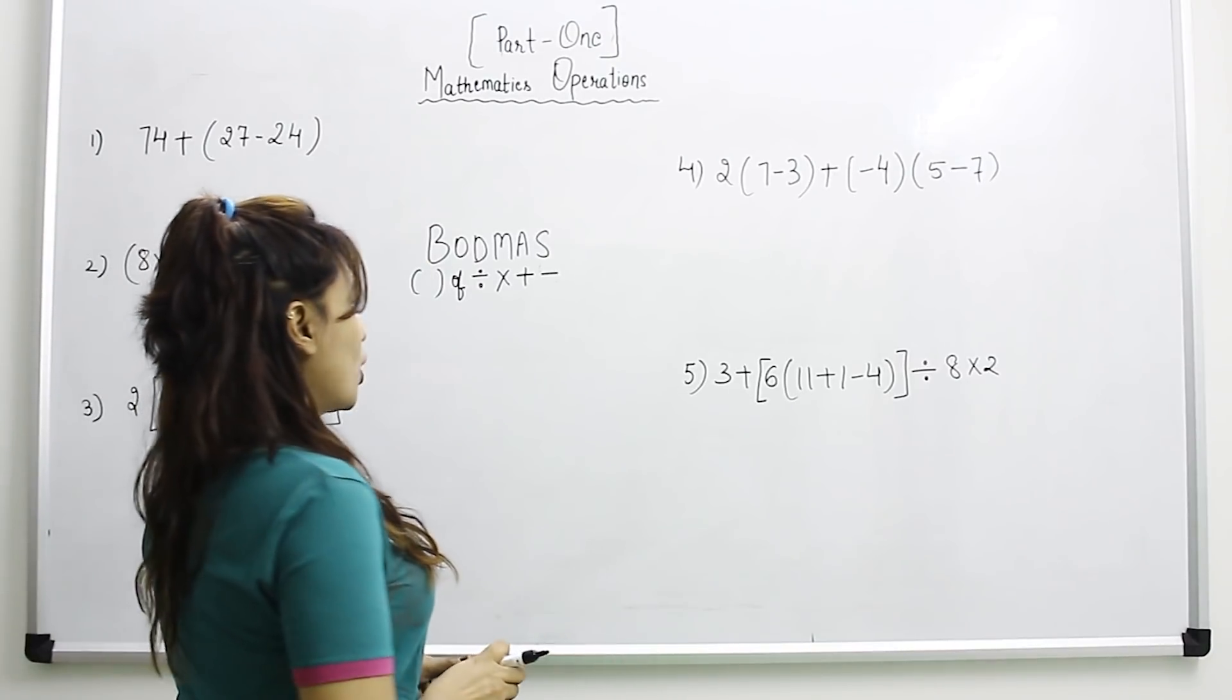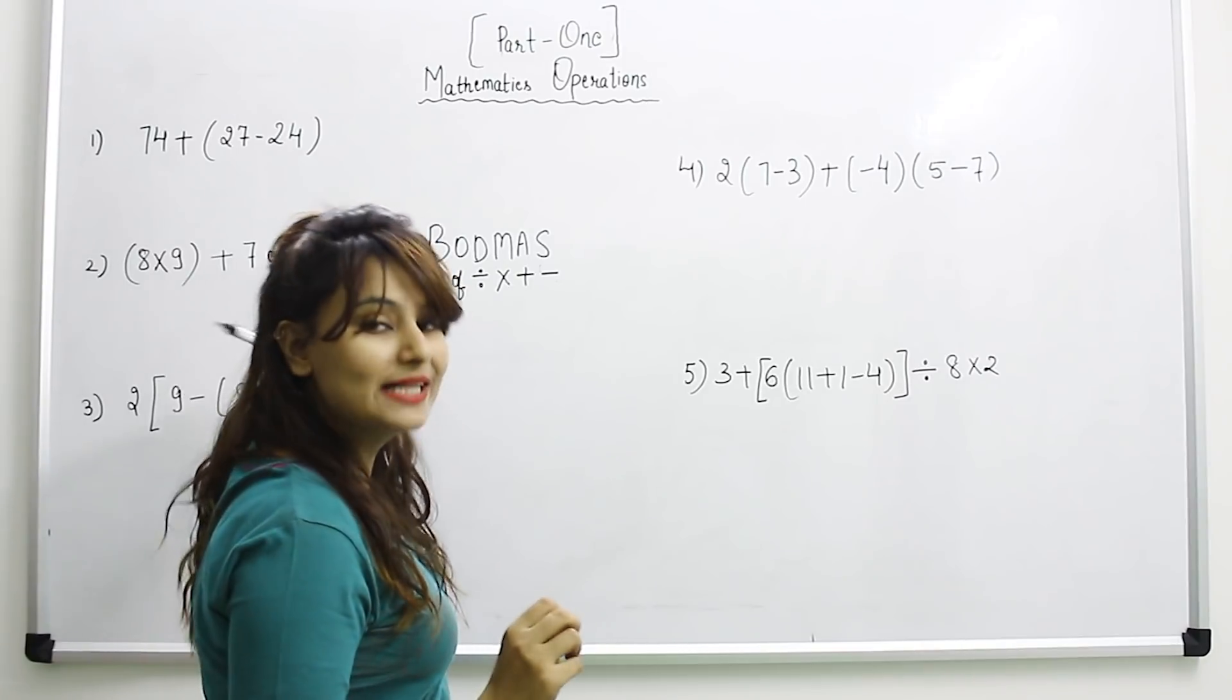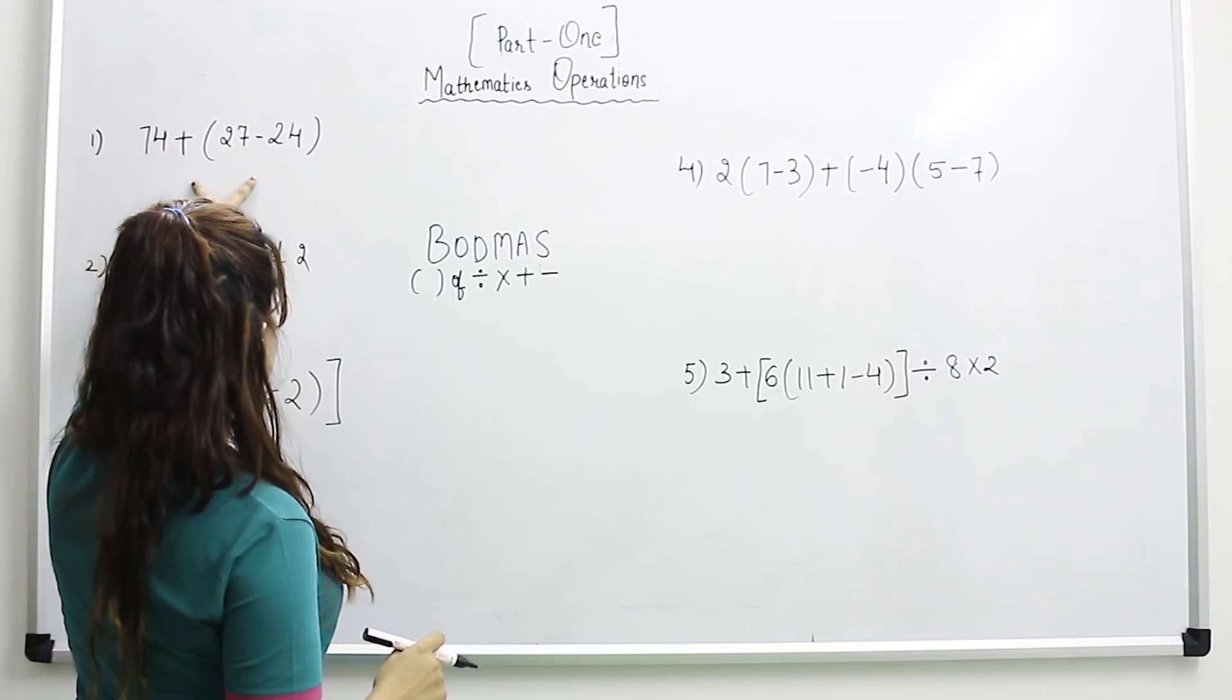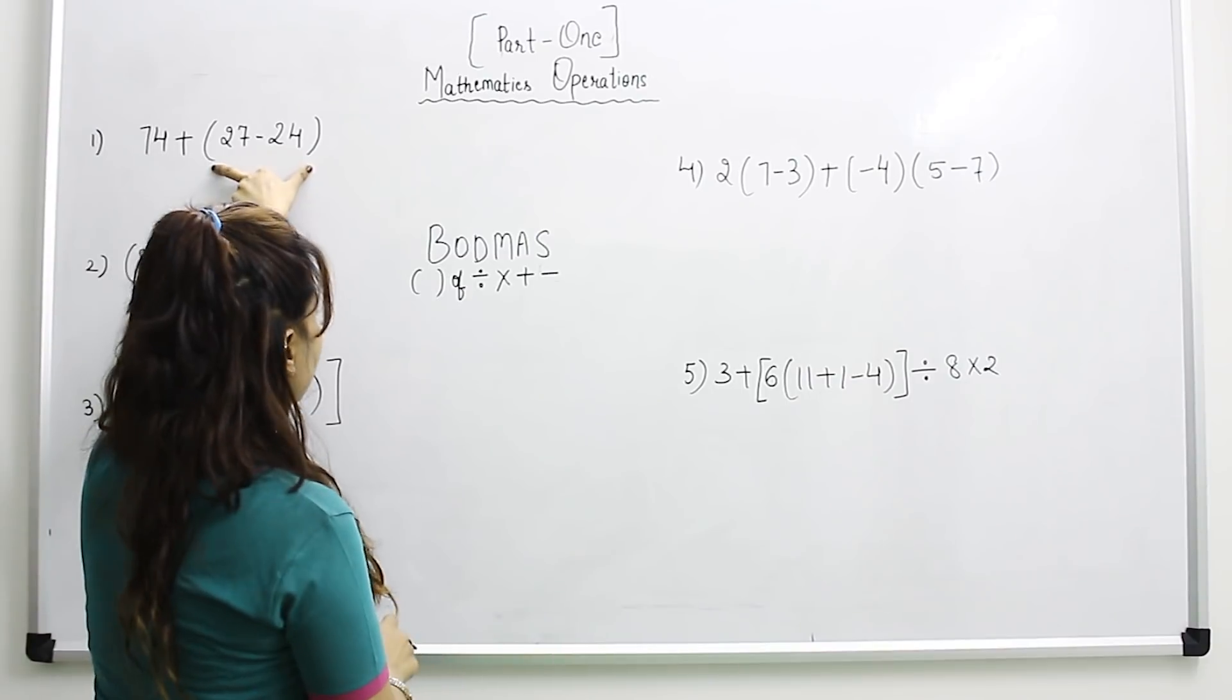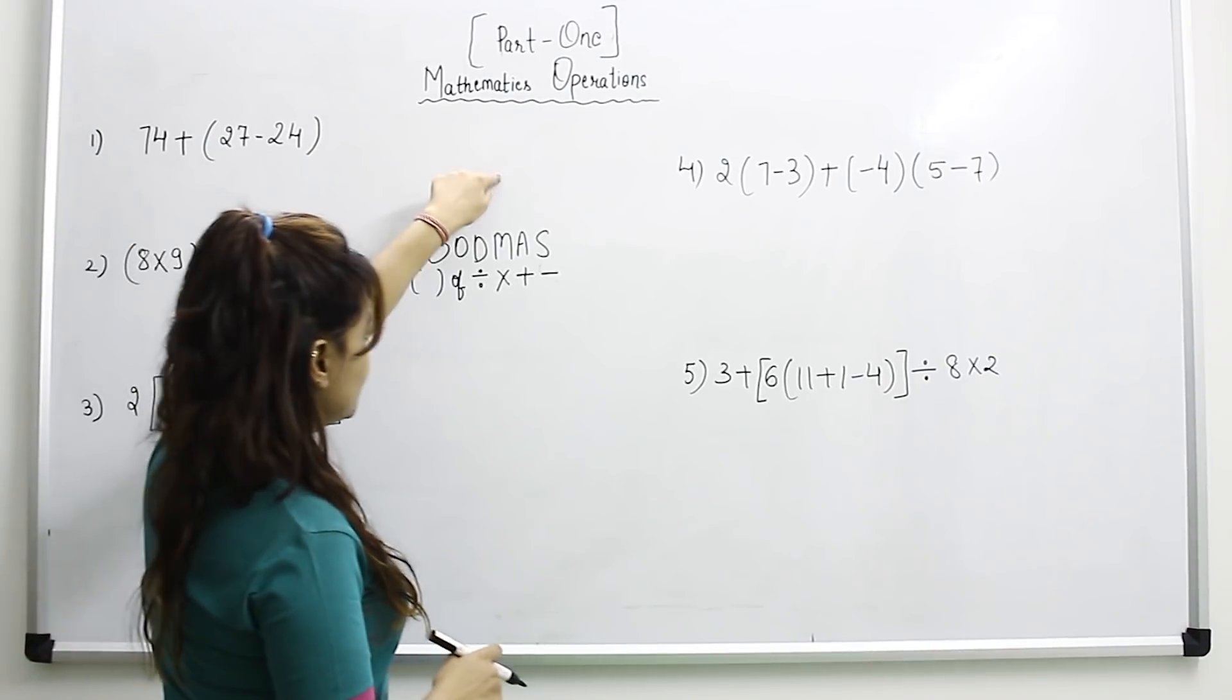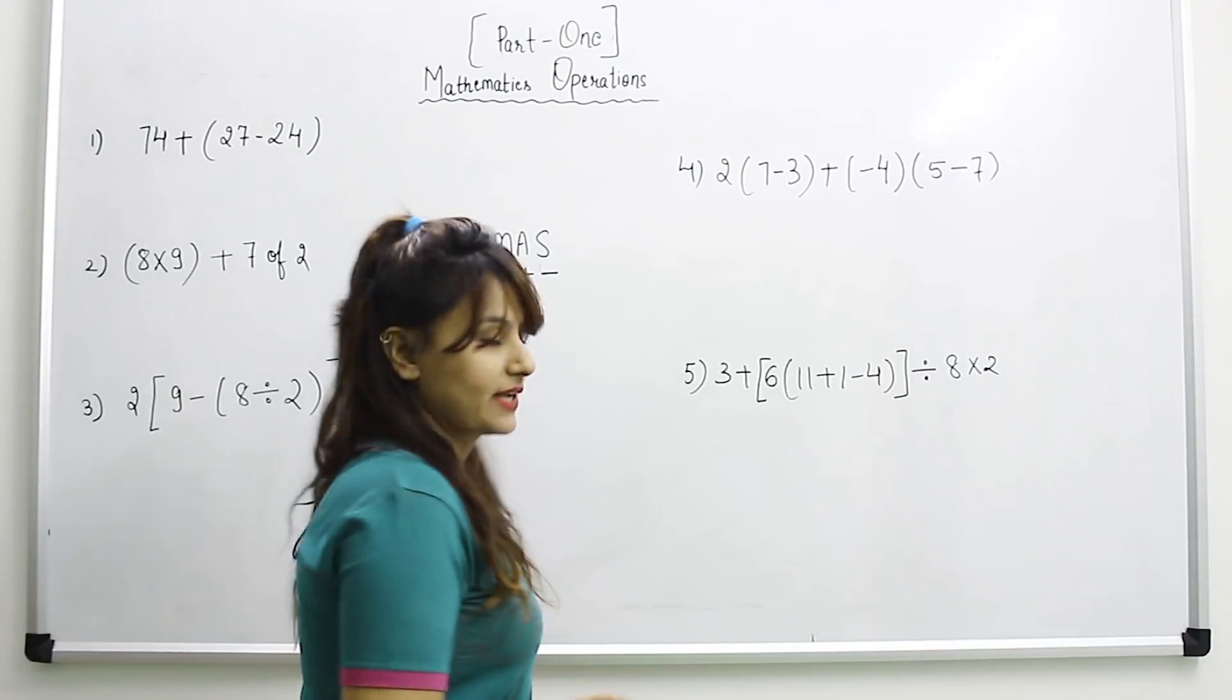So we have to follow this BODMAS trick while solving these problems. First we need to solve the bracket. Let's say in these problems there is a bracket, so we have to solve bracket first. After that we have to follow if there is any of, then division, multiplication, addition, and later on subtraction.